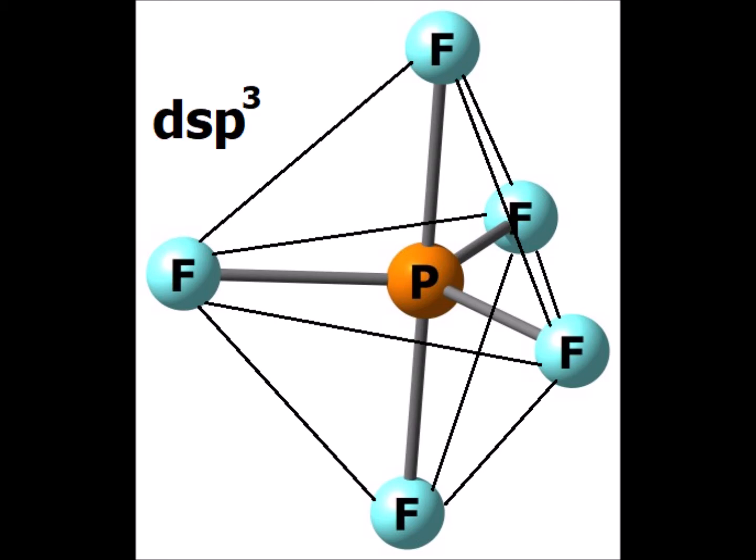This gives us dsp3 hybridization. If we add 1 d, 1 s, and 3 p's, this gives us a total of 5 orbitals, which corresponds to the 5 electron domains around the central phosphorus atom.